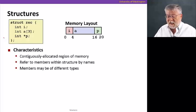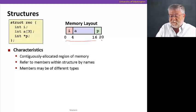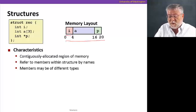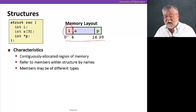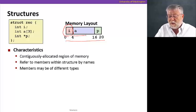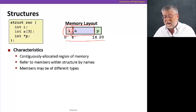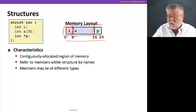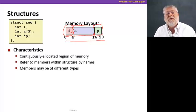In memory, it's going to be laid out as a contiguous set of bytes for each of those parts. The first four bytes will be the integer i. The next 12 bytes will be the three integers of the array a, contiguously allocated. And then finally, the last four bytes will be a pointer to an integer in a 32-bit architecture. So total for this struct is a 20-byte chunk of memory, contiguously allocated.